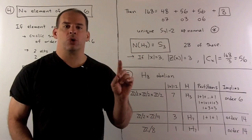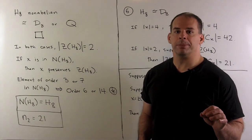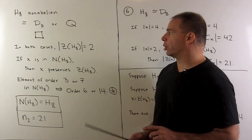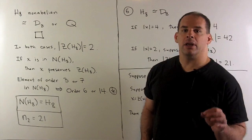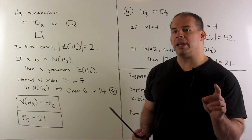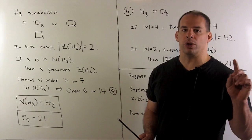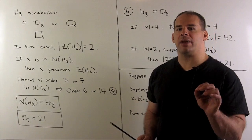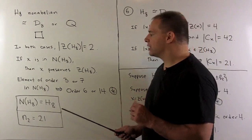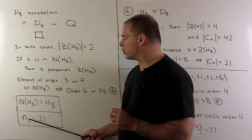So, our Sylow 2-subgroups are going to be non-abelian. Since H sub eight is non-abelian, it's isomorphic to either D sub eight (the symmetry group of the square) or the quaternion group. In either case, the order of the center is two, and any element in the normalizer of H8 carries the center back into itself. If the normalizer had an element of order three or seven, we'd have elements of order six or 14, which can't happen. So the normalizer of H sub eight is H sub eight itself, and we have exactly 21 Sylow 2-subgroups.